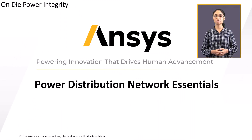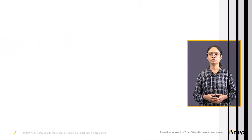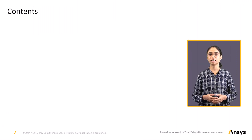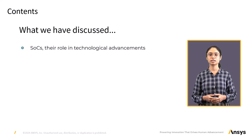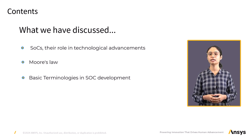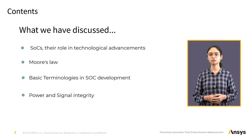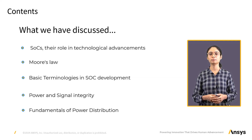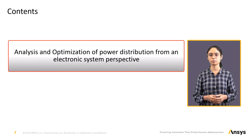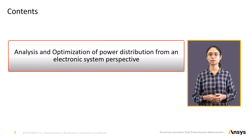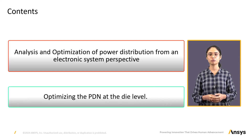Hello and welcome everyone. Today we are set to embark on another exciting lesson of our online course on on-chip power integrity. Before we dive into the contents of this lesson, let's quickly recap what we have covered so far. In the previous lessons we have discussed SoCs, their role in technological advancements, Moore's Law, basic terminologies in SoC development, and the SoC design cycle. In lesson two we introduced power and signal integrity and explored the fundamentals of power distribution. In this lesson we will guide you through the analysis and optimization of power distribution from an electronic system perspective, prior to delving into the core topic of this course — optimizing the PDN at the die level.